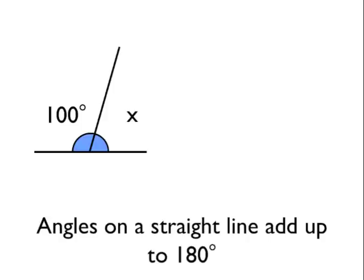So in this diagram, I've got two angles which are on a straight line. The first angle is 100 degrees and the second angle is unknown. I'm going to call that angle X and the purpose of this exercise is to calculate how large angle X must be given the information that's in that diagram.